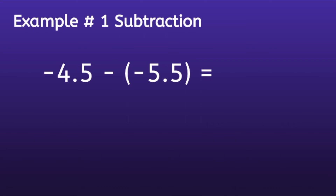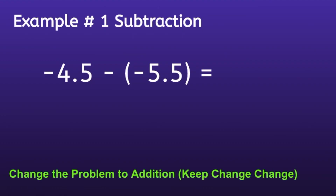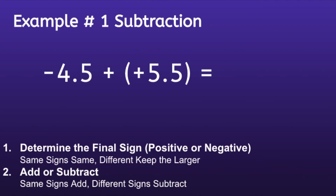Example number one — subtraction. When we look at this problem, it looks a lot more complicated, but the good news is I'm actually going to use something called 'keep change change' to change this subtraction problem into an addition problem. How 'keep change change' works: I'm going to keep the first number the same — so I'll keep that negative 4.5 the same. I'll change that minus sign into a plus sign, and then I'll change that last number to its opposite. So the opposite of negative 5.5 is positive 5.5. Now we have an addition problem, so we can use the same steps from before.